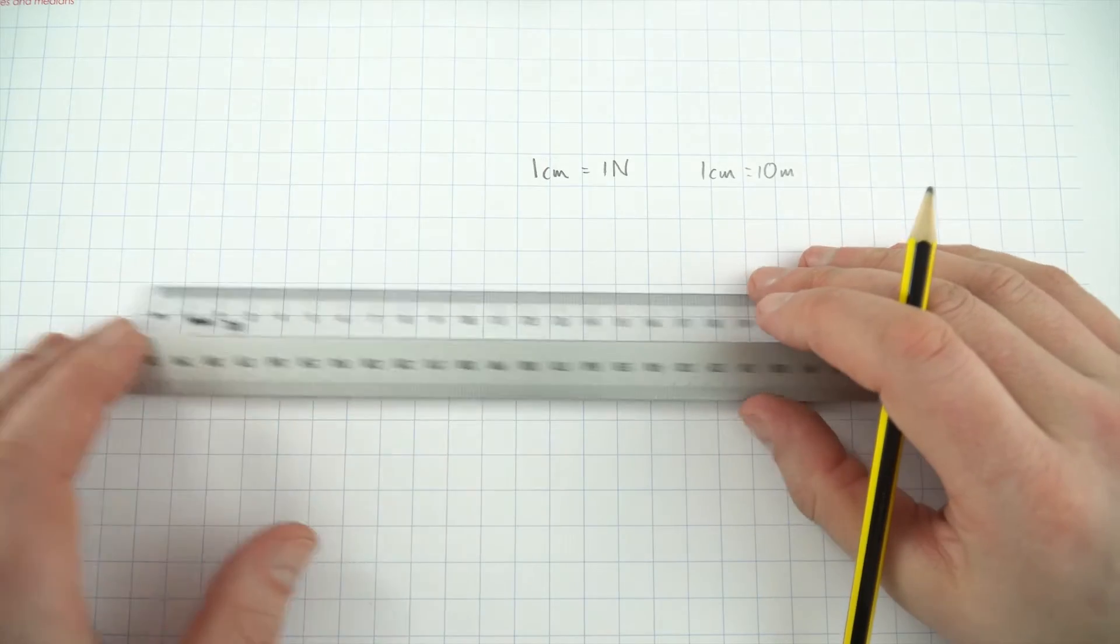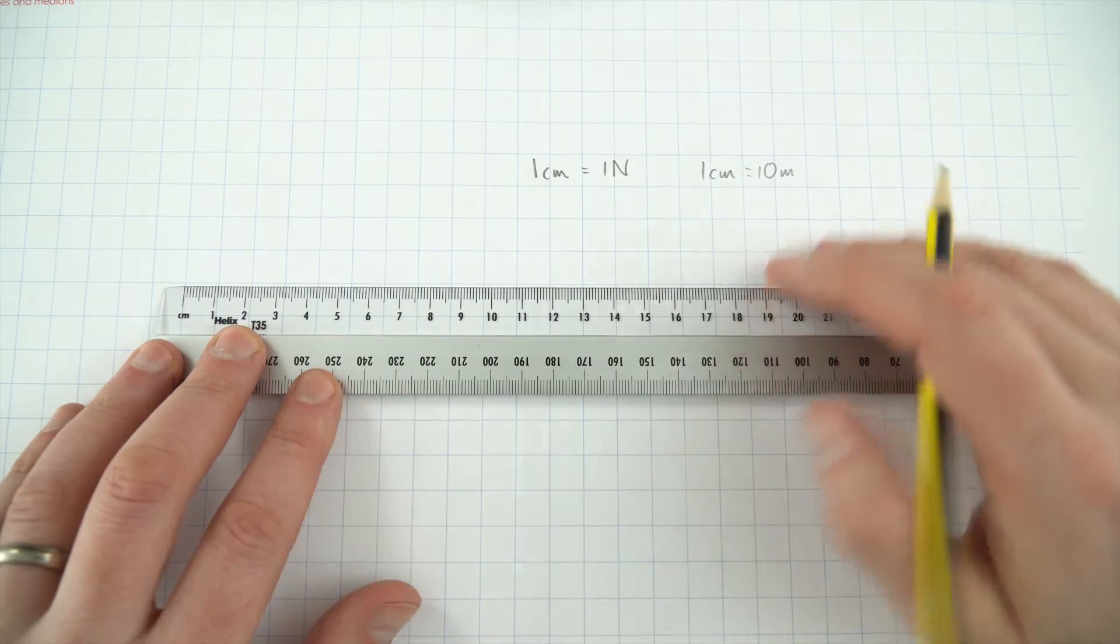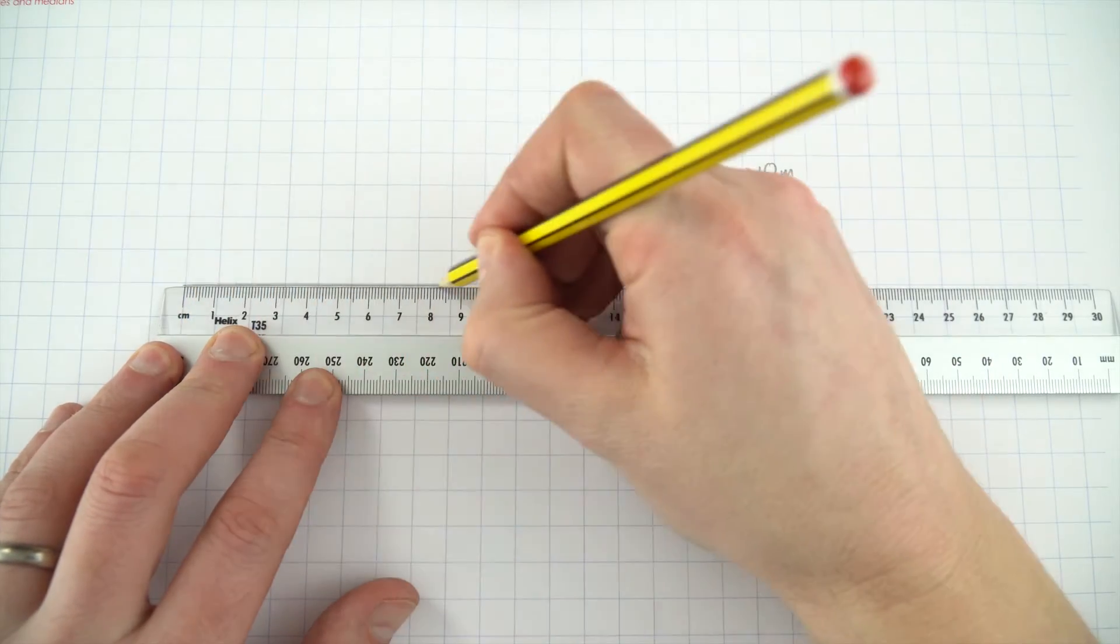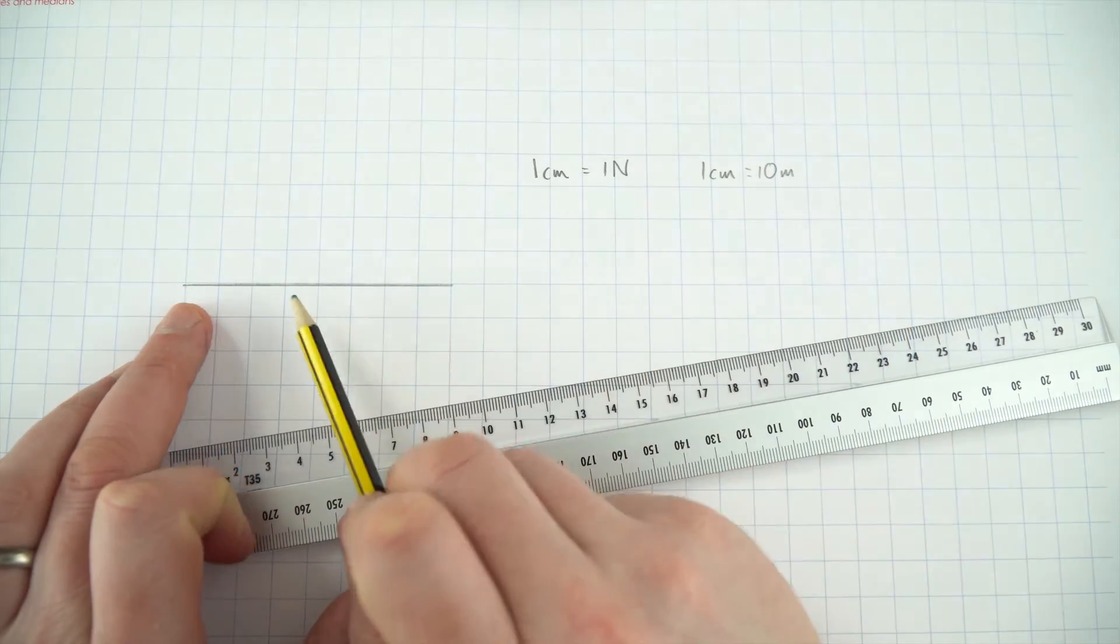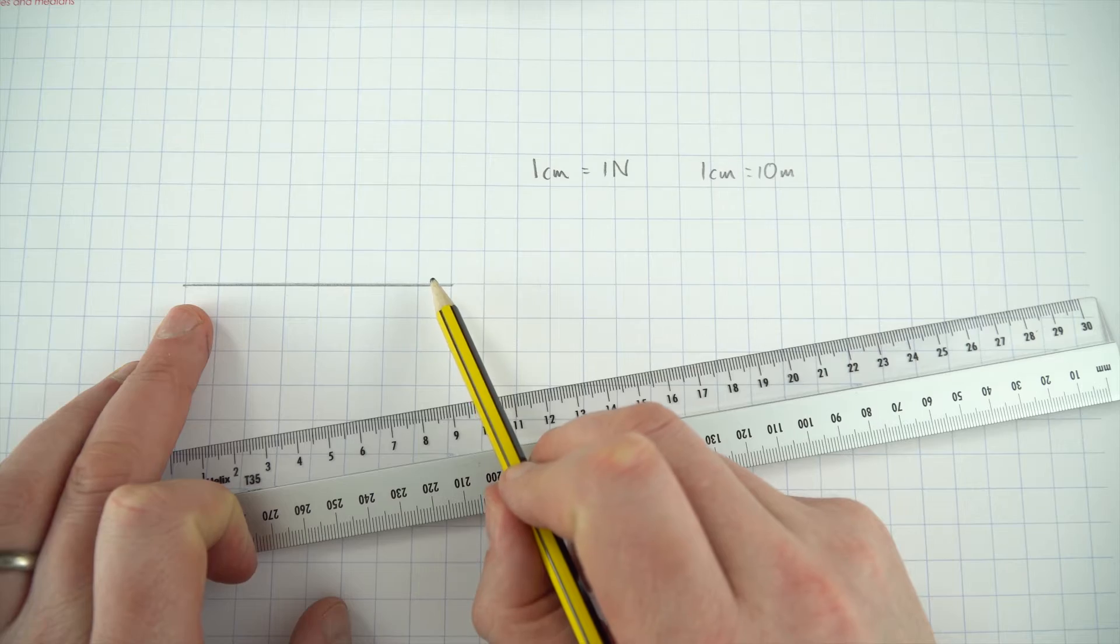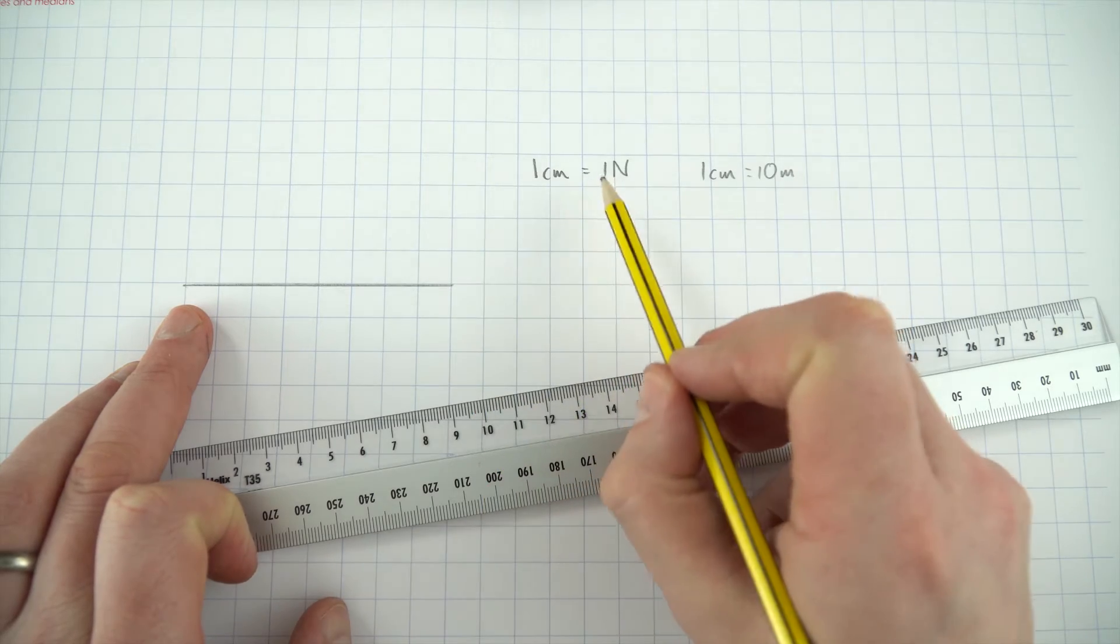And then it just comes down to taking your time and a little bit of care as you're drawing things. So maybe you're doing a certain arrow of a certain distance. If you know that this distance is eight squares then that represents maybe eight newtons.